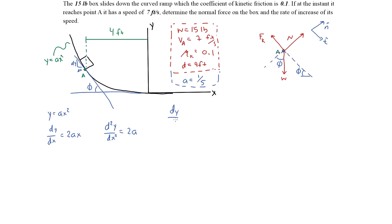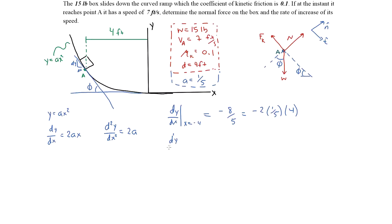We evaluate dy/dx at x equals negative 4 feet — negative because point A is on the negative x-axis side. Although the symmetric equation makes the magnitude the same, we want to be rigorous. Plugging in gives dy/dx = -8/5. The second derivative evaluated at the same point is constant at 2/5.